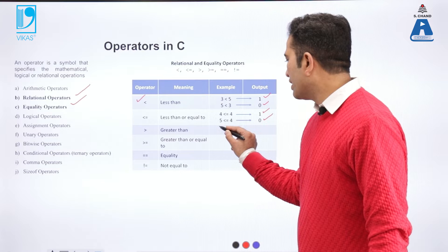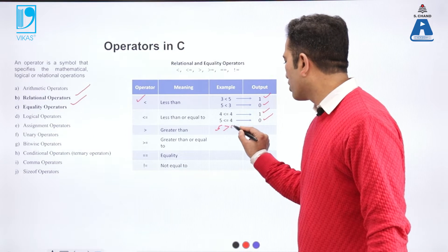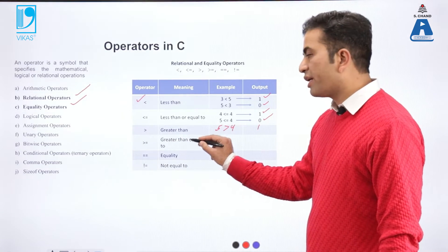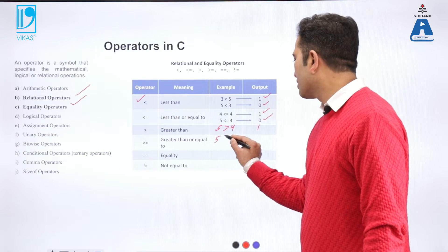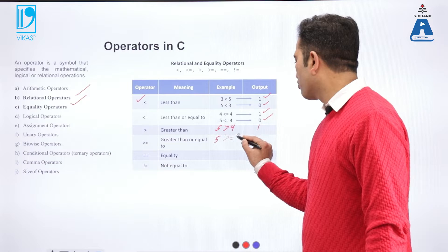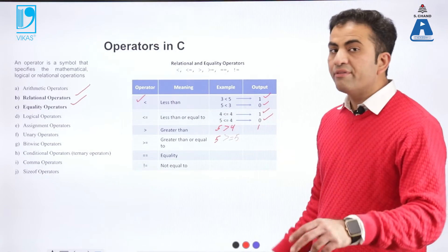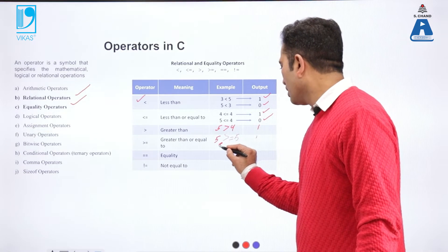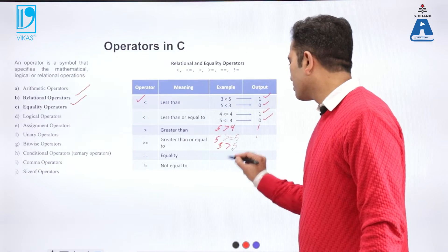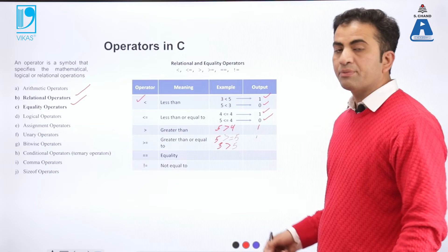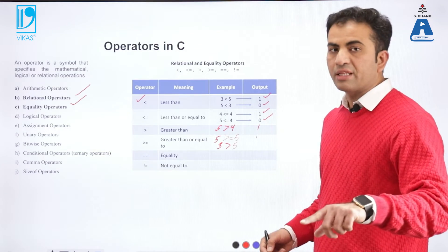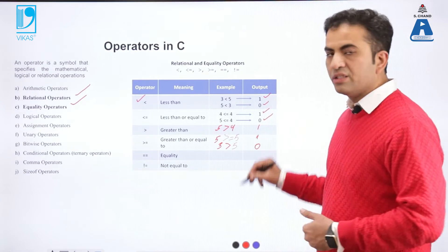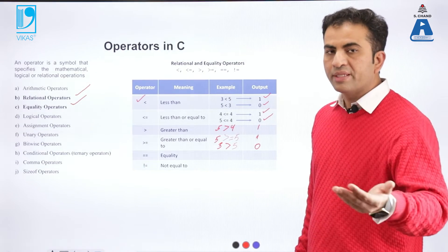This is greater-than. If 5 is greater than 4, the condition is true, that is 1. Greater-than-or-equal-to: 5 is greater than or equal to 5 — this is true because 5 is equal to 5, so output is 1. If 5 is greater than 5, that is absolutely false because 5 is not greater than 5, so the output will be 0. Here the meaning is: 1 is true and 0 is false.